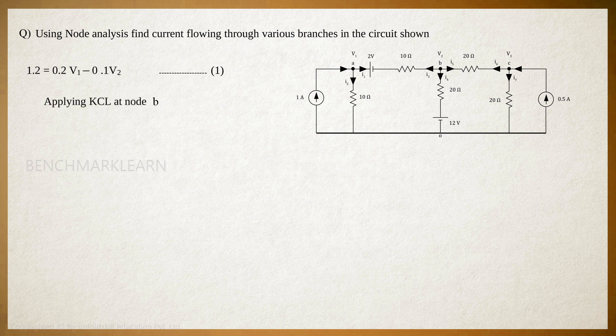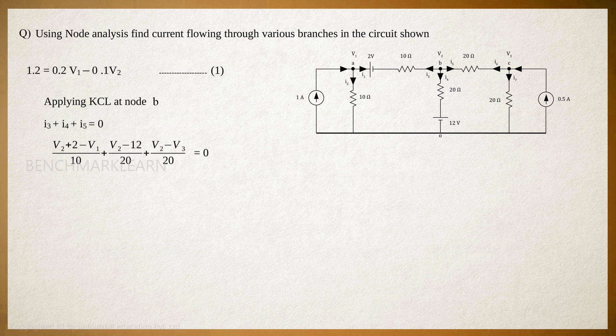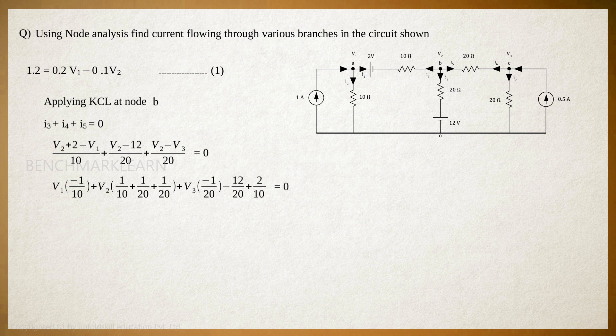Next, apply KCL to node B. I3 plus I4 plus I5 is equal to 0. Expressing the currents in terms of node voltages, we get (V2 + 2 − V1)/10 + (V2 − 12)/20 + (V2 − V3)/20 is equal to 0. Or, V1 into (−1/10) + V2 into (1/10 + 1/20 + 1/20) + V3 into (−1/20) − 12/20 + 2/20 is equal to 0. Or, −0.1V1 + 0.2V2 − 0.05V3 is equal to 0.4. Let this be equation number 2.